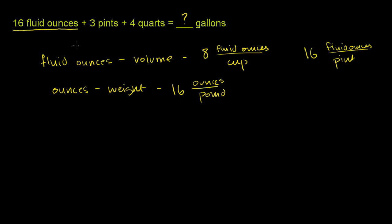Now, let's actually tackle the problem. So we have 16 fluid ounces. I just told you that there are 16 fluid ounces per pint. So 16 fluid ounces times, now we want the fluid ounces to cancel out.